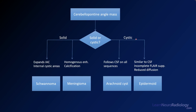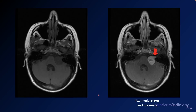For cystic tumors, they will mostly show fluid signal. Think about two possibilities: arachnoid cyst and epidermoid. If it follows CSF on all sequences, think arachnoid cyst. If it looks not quite the same as CSF — for example, it doesn't completely suppress on FLAIR — consider epidermoid. The key feature of epidermoids is reduced diffusion, so they tend to be very bright on DWI. Use this kind of flowchart when you see a CP angle mass.